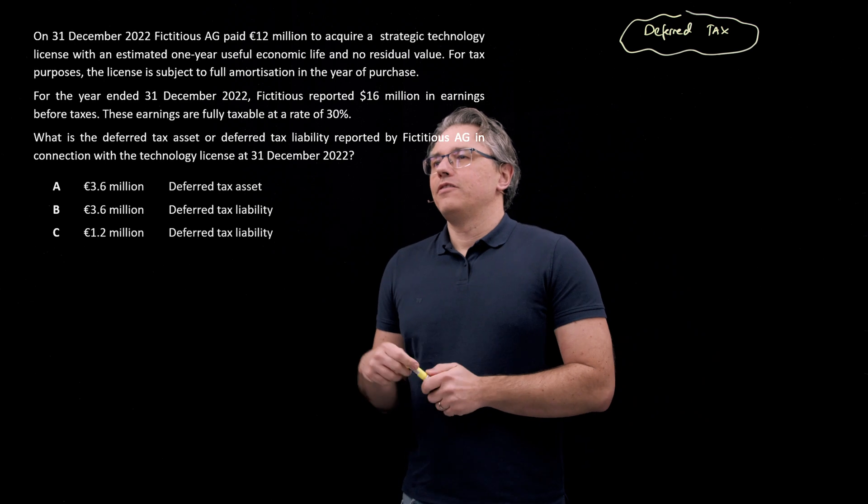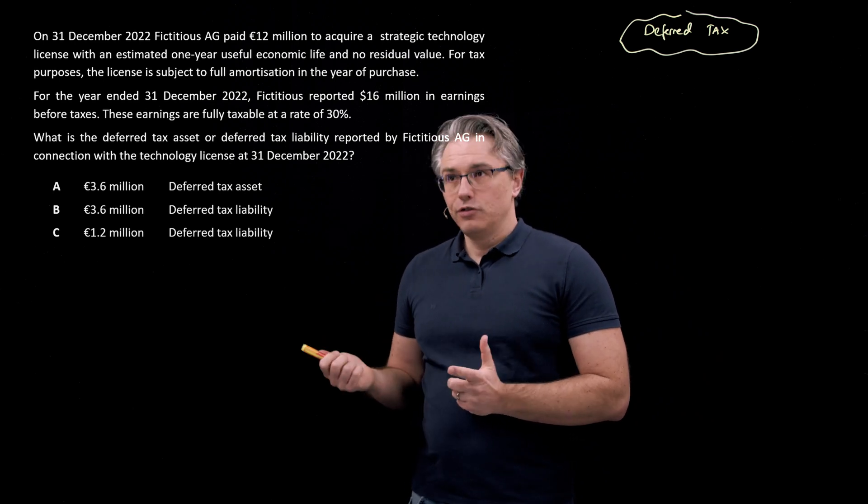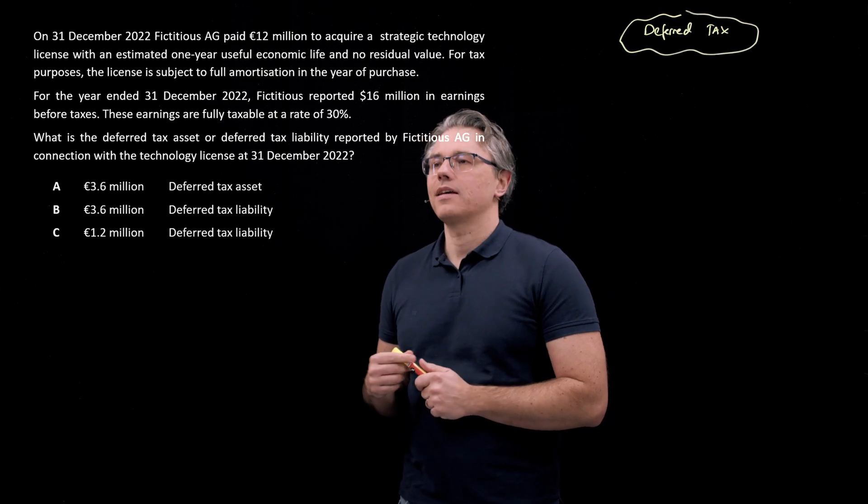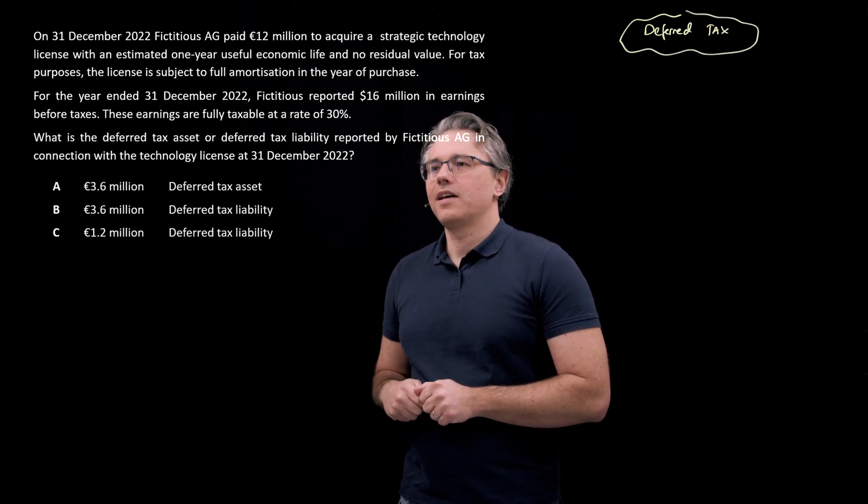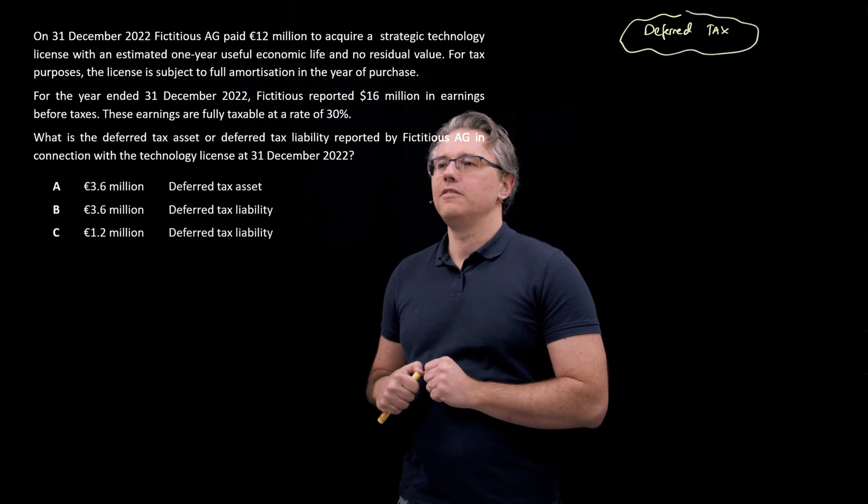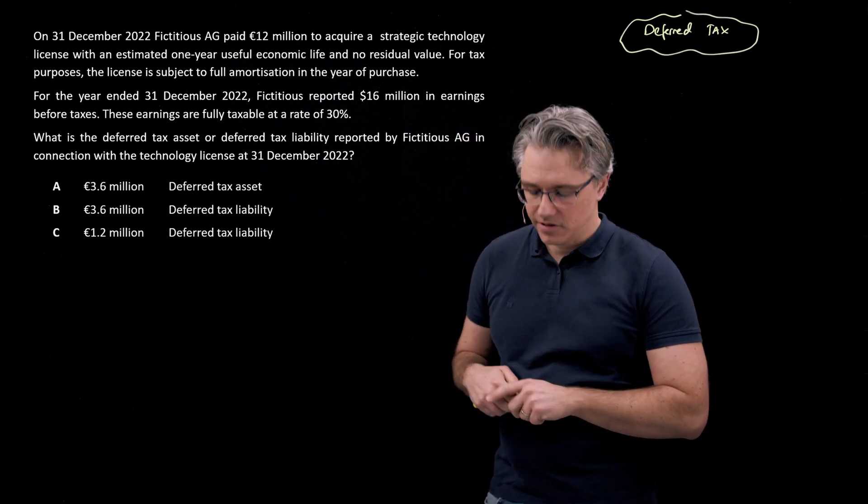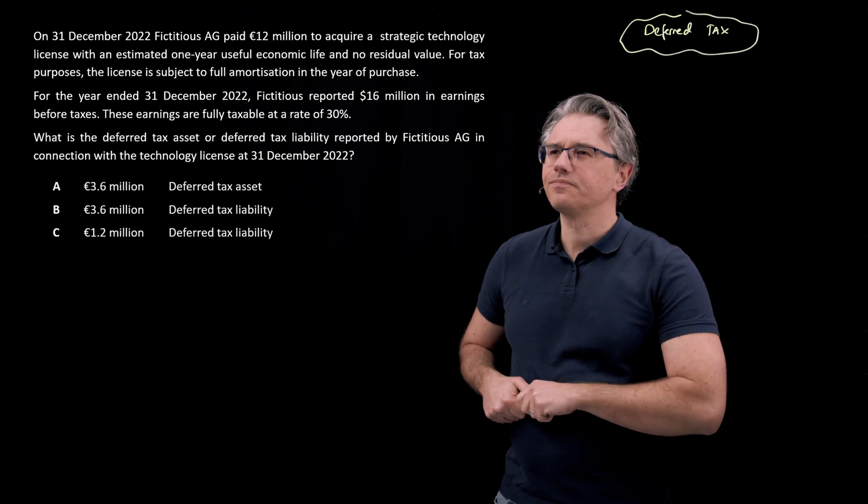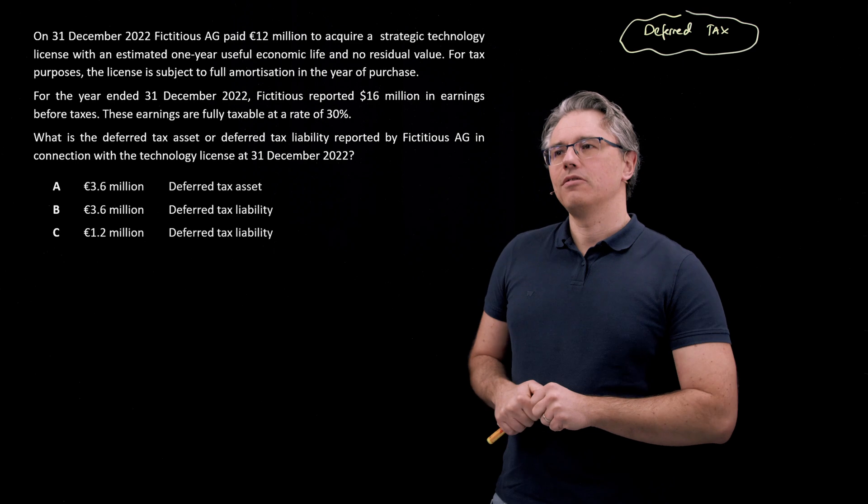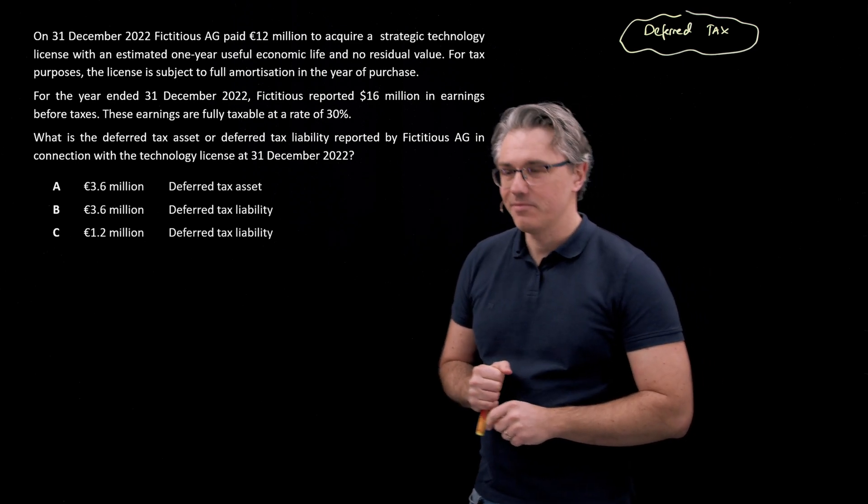And for the year ended 31st of December 2022, fictitious reported 16 million in earnings before taxes. These earnings are fully taxable at a rate of 30%. What is the deferred tax asset or deferred tax liability reported by fictitious in connection with the technology license at 31st of December 2022?